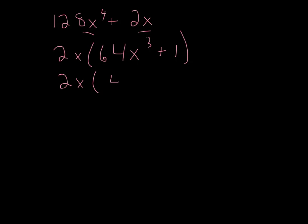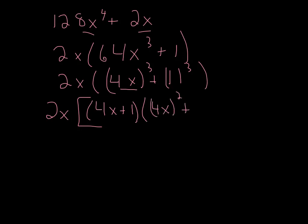So I break it into its house. 4x cubed would get me to 64x cubed, and 1 cubed would get me to 1. So now I've got the sum of 2 perfect cubes, so let's use our formula. 2x is just chilling on the outside. So it's just going to be the sum of the terms. So it would be 4x plus 1 times the square of the first term, so 4x squared, that quantity squared, the opposite product, so minus 4x times 1, and then plus the square of the last, 1 squared.